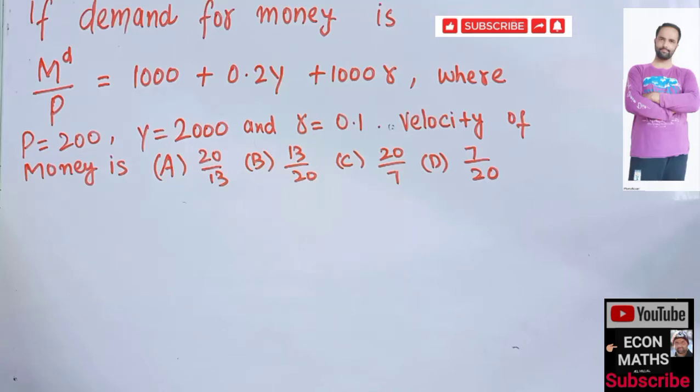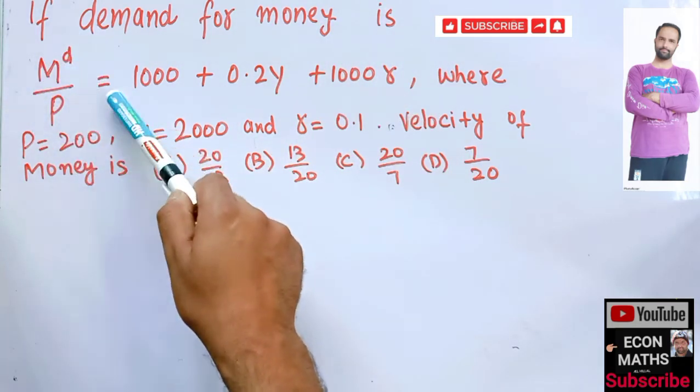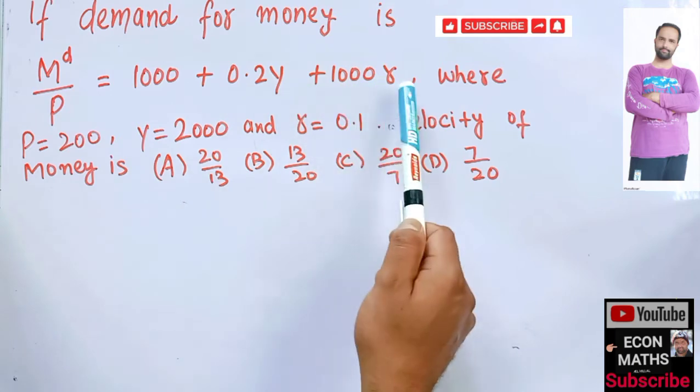In this video we will solve a problem on quantity theory of money. The question is: if demand for money is given as M^d/P = 1000 + 0.2Y + 1000r, where...